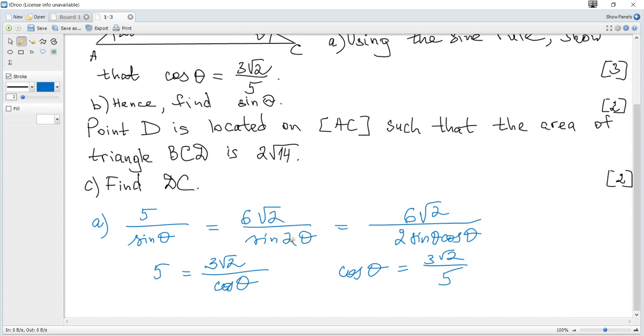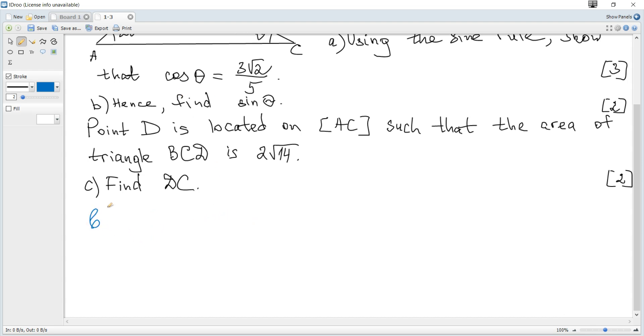The next question, part B: hence find sine of theta. To find sine when cosine is given, we can use the main trigonometric identity: sine squared plus cosine squared equals 1. This formula is given in the data booklet.